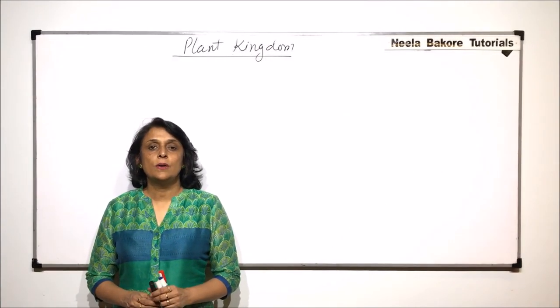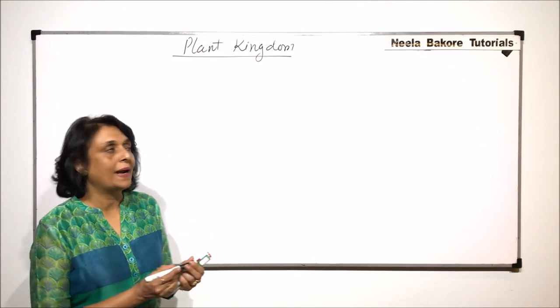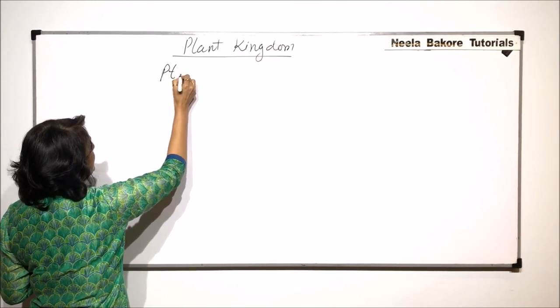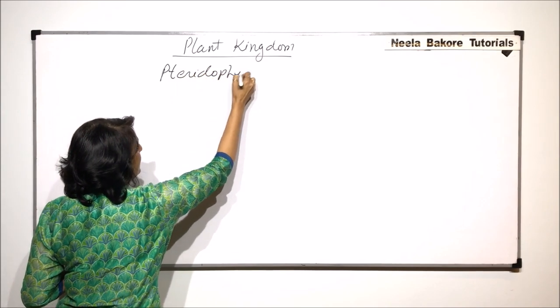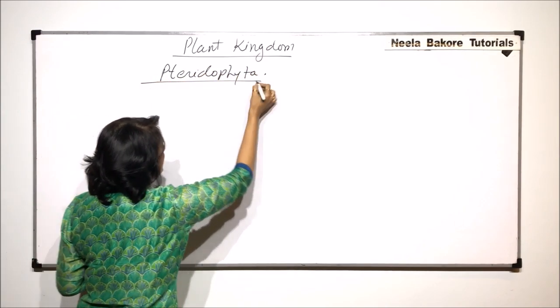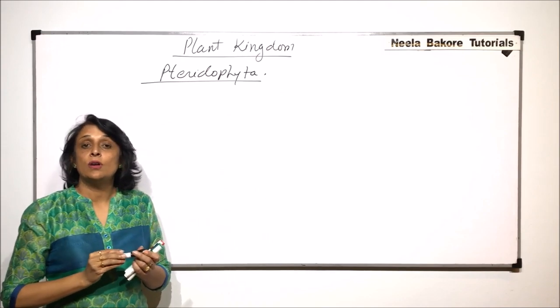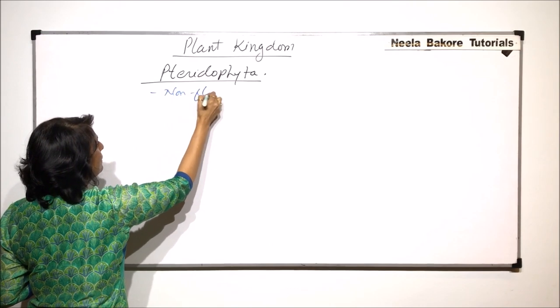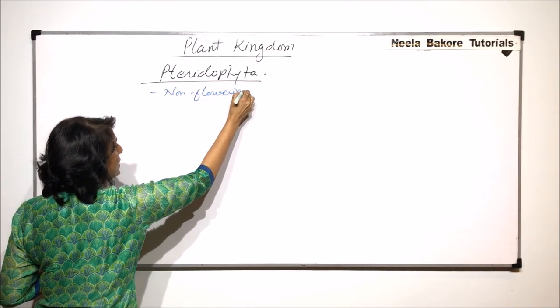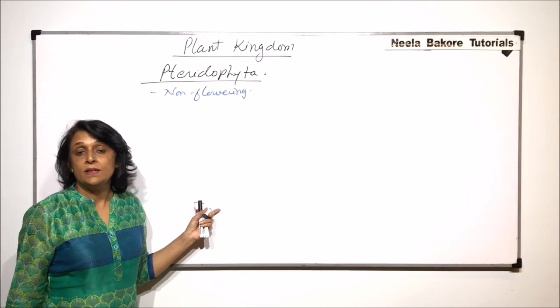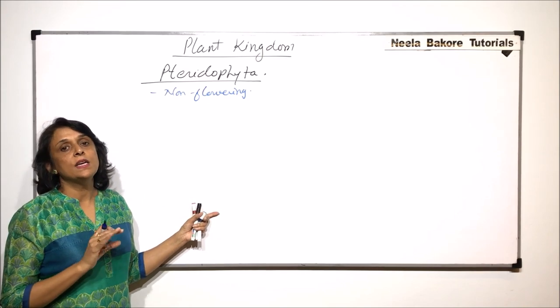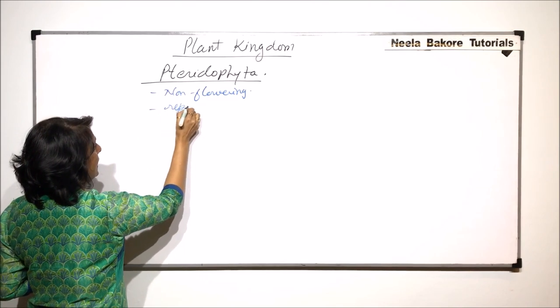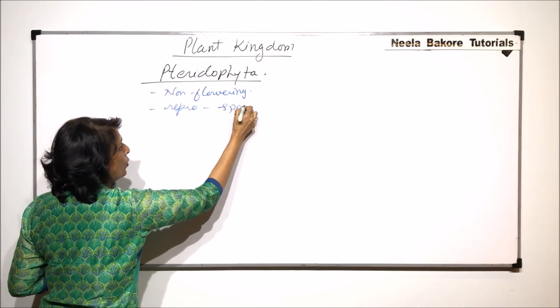In this part, we will talk about another group of plant kingdoms, and that is Pteridophyta. The plants which are placed under Pteridophyta are called pteridophytes. They are non-flowering plants. That means the reproduction is not by seed or fruit formation. The reproduction is by spore formation.